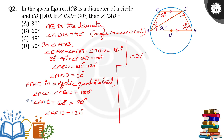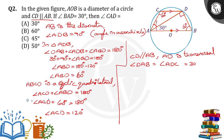CD is parallel to AB, as given. When CD is parallel to AB and AD is the transversal, angle DAB is equal to angle ADC — both are equal to 30 degrees, since they are alternate interior angles. So this angle ADC is also equal to 30 degrees.